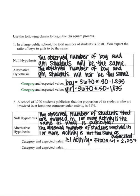My second category is that they are not involved in at least one activity. So if 61% of my students are involved, then 100 minus 61 would not be involved, or 39%. In order to get the number of students expected to not be involved, I will take the total number, 3,700, and multiply it by 0.39, or 39%, to find the expected number of students that would not be involved in at least one extracurricular activity.